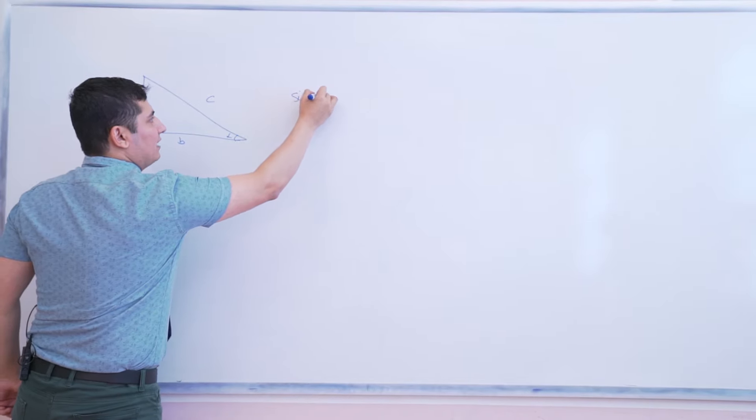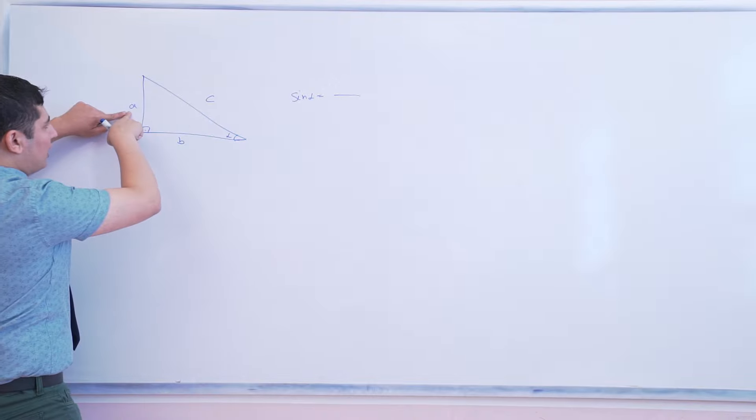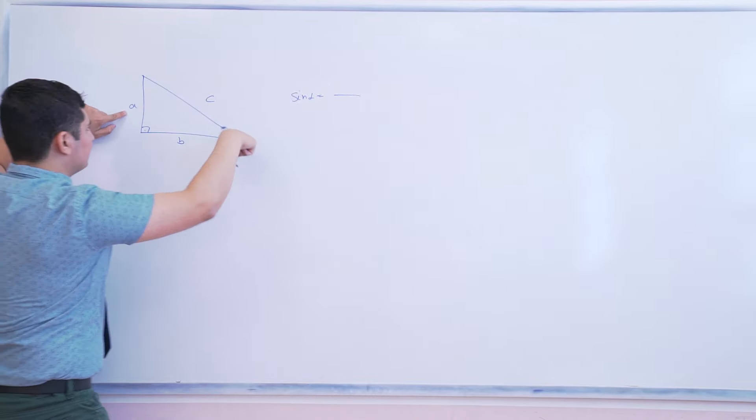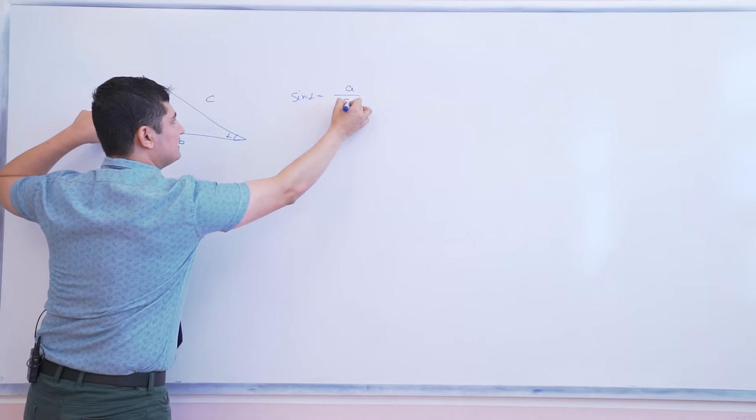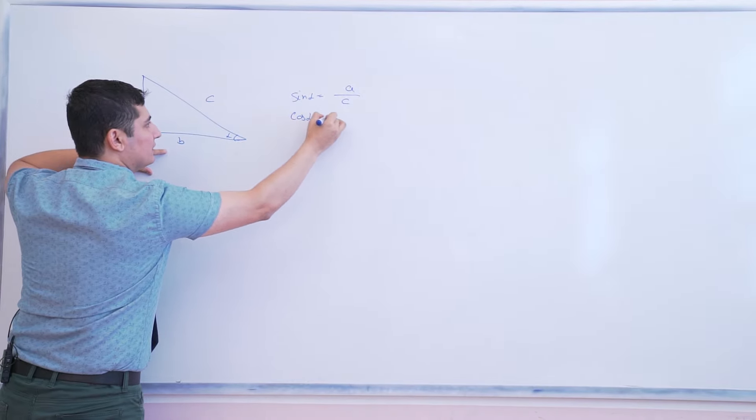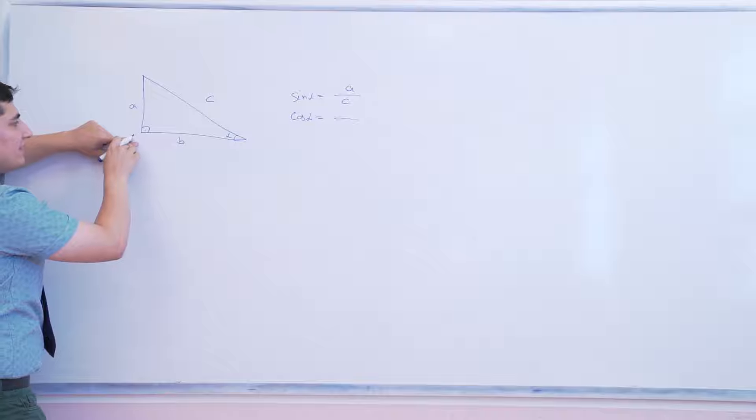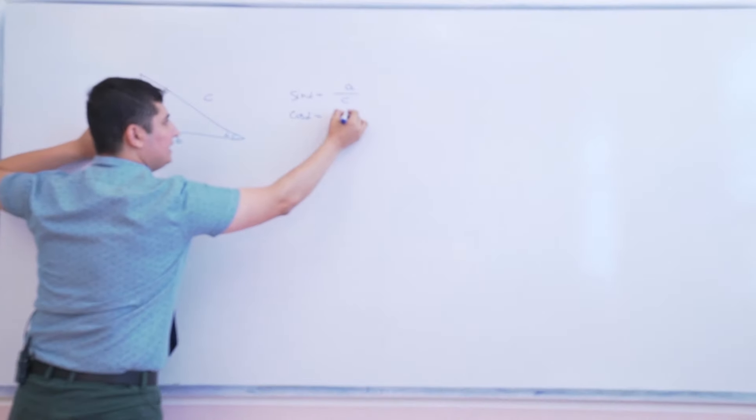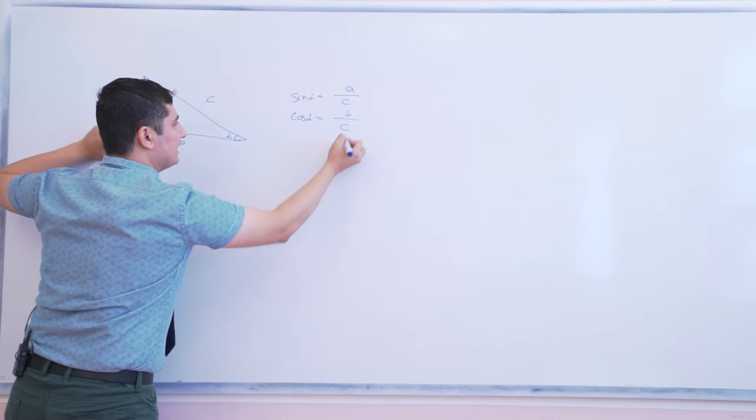To get the sine value of alpha we have to divide the opposite to the hypotenuse. Opposite is A, hypotenuse is C. To get the value of cosine alpha you have to get the ratio of the adjacent B divided by C, yes?